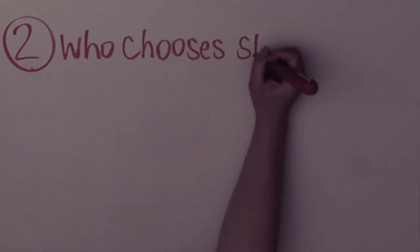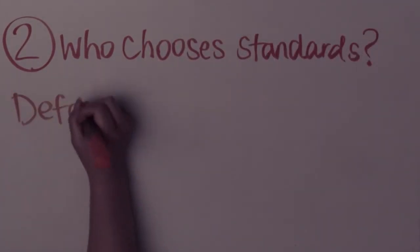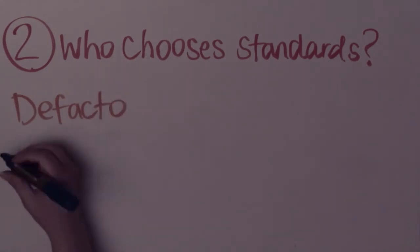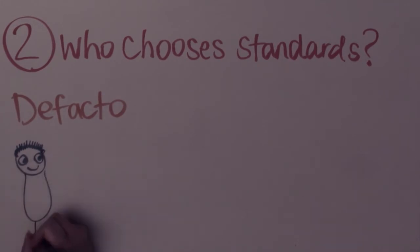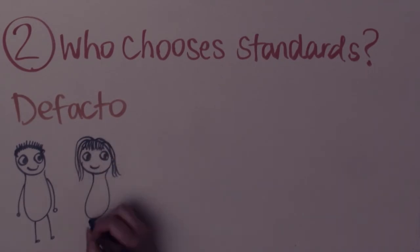If standards are so important, where do they come from? There are two ways that they're chosen. It can be by a group of people who have agreed on a certain way of doing something based on customs or traditions, such as the layout of your keyboard, or which side of the road you drive on. These are known as de facto standards.